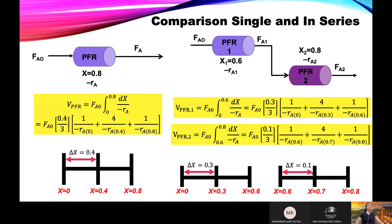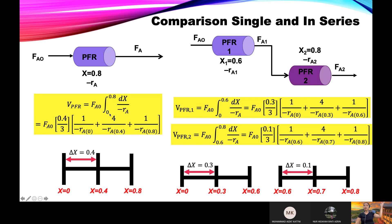An example comparing single PFR versus PFR in series, both achieving 80% conversion: for a single PFR, integration goes directly from 0 to 0.8. No conversion before entering reactor one; after exiting, 80% is converted.